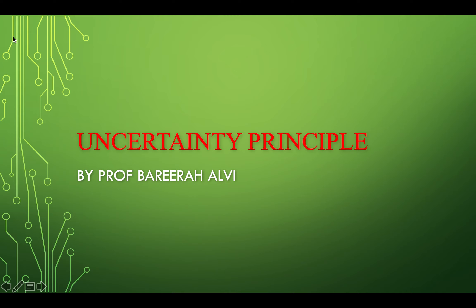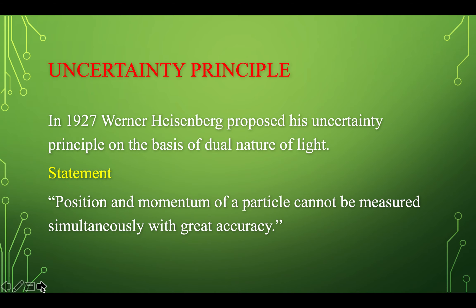Students, today we have to discuss about the uncertainty principle. In 1927, Werner Heisenberg proposed his uncertainty principle on the basis of the dual nature of light, as sometimes light behaves like a wave and sometimes its particle-like properties are prominent.